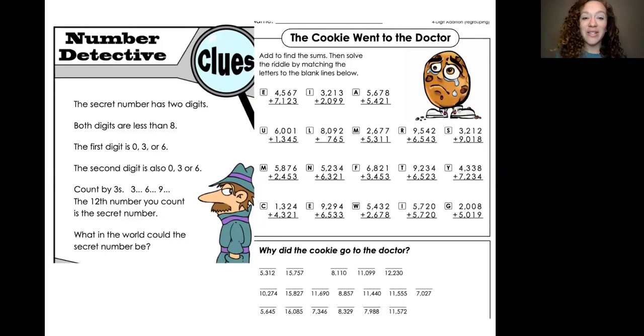Hmm, count by threes. Three, six, nine, those numbers are called multiples, the numbers we say when we skip count. Great job! The twelfth number you count is the secret number. Hmm, what in the world could the secret number be? So pop quiz, if I can get to this number by counting by threes, that means this number is divisible by three. That's right. Okay, good luck finding the mystery number.